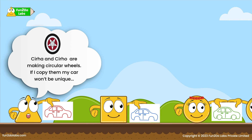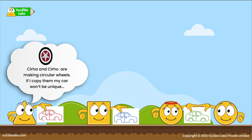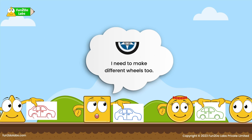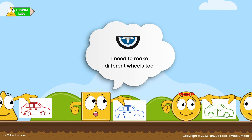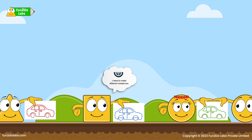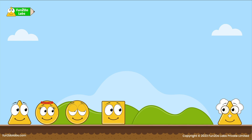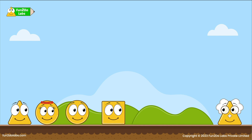Squareo thinks: if I copy them my car won't be unique, so he decides to make oval-shaped wheels. Treehoe also wants to make different wheels and chooses to make wheels in the semicircle shape. Each participant has now chosen a distinct wheel design for their car model.